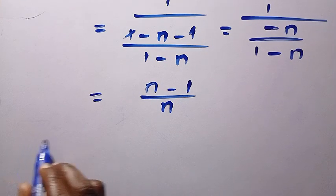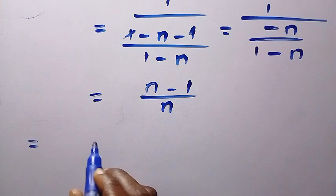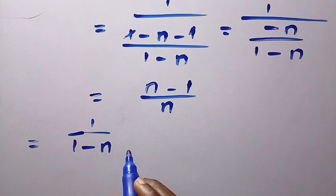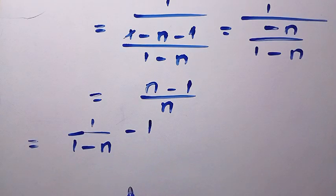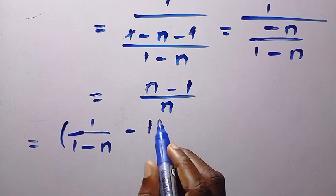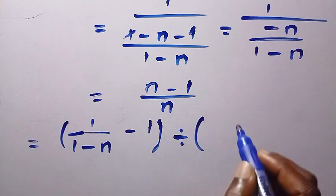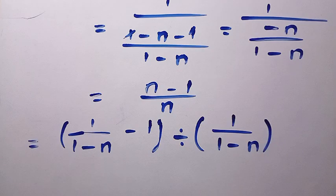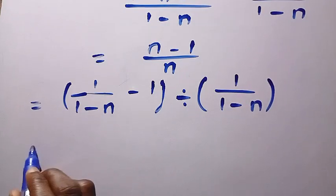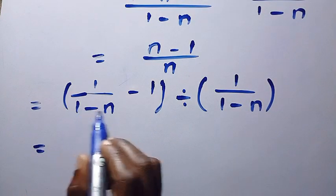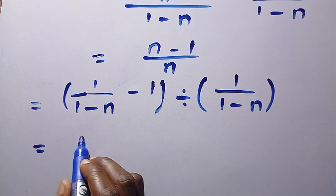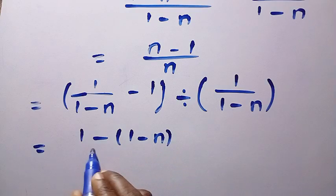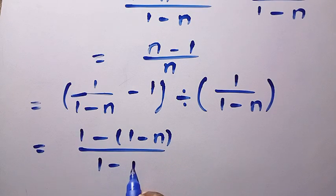Doing that, we have n replaced by 1 divided by (1 minus n), then minus 1, all in brackets, divided by n which is also replaced by 1 divided by (1 minus n). So we have [1/(1 minus n) minus 1] divided by [1/(1 minus n)], and we multiply through by (1 minus n) on top and bottom.